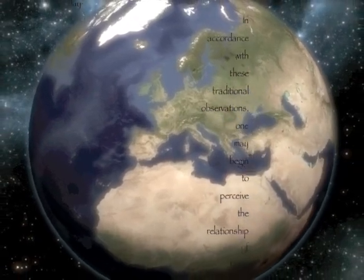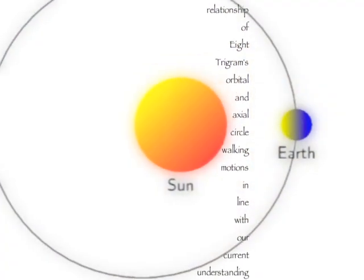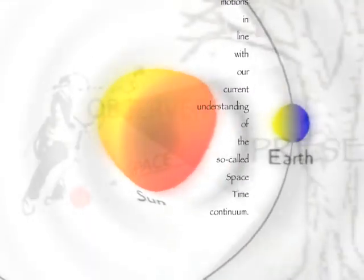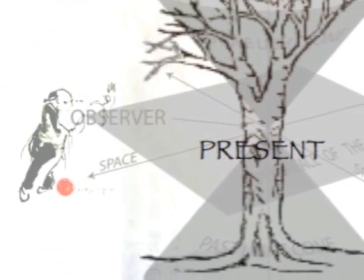In accordance with these traditional observations, one may begin to perceive the relationship of eight-trigrams, orbital and axial circle-walking motions in line with our current understanding of the so-called space-time continuum.